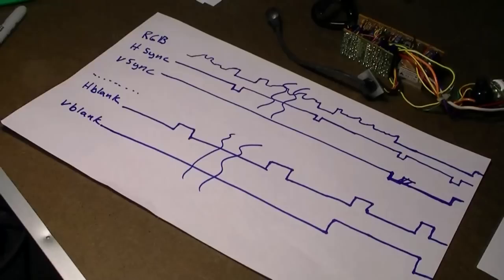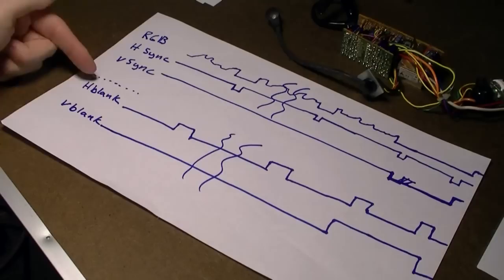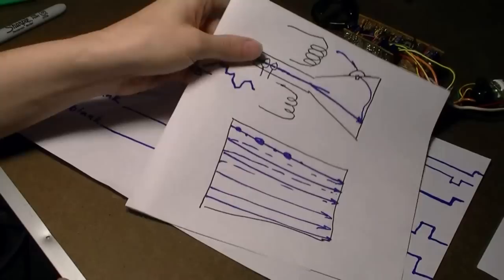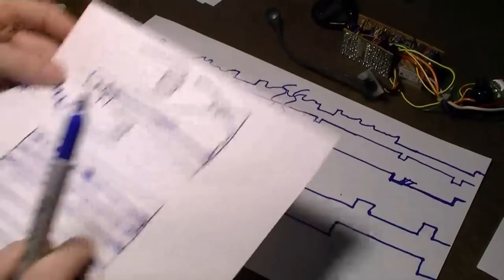For a VGA monitor, these are the signals we need to generate. A red-green-blue analog signal, horizontal and vertical sync, and internally a vertical and horizontal blanking signal. The RGB signals are three wires. These analog signals will control the electron gun inside the CRT. Higher voltages are brighter pixels, and lower voltages are darker pixels.